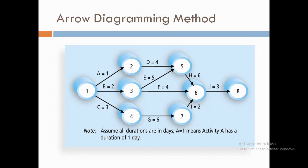For sequencing, network diagrams are used. The Arrow Diagram Method (ADM) represents activities as arrows with nodes being the starting and ending points. As shown in the diagram, activity A has a duration of one day, after which activity D is performed, and likewise one activity ends and the next one starts. The project is completed when all activities, including the last activity J, are done.